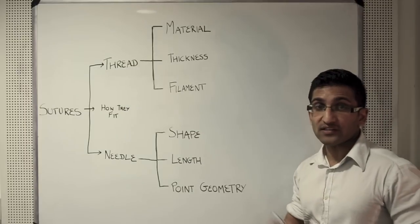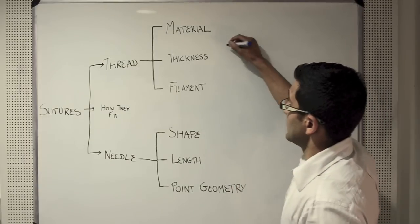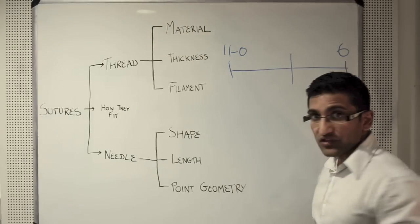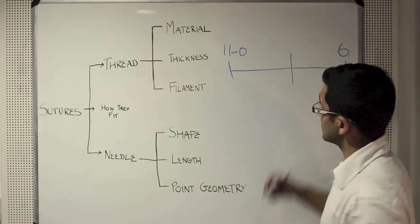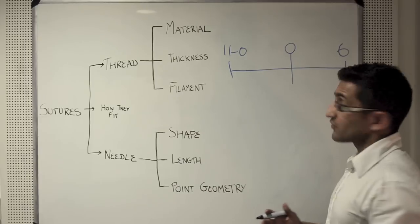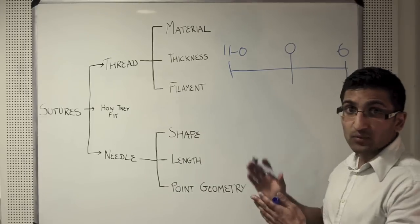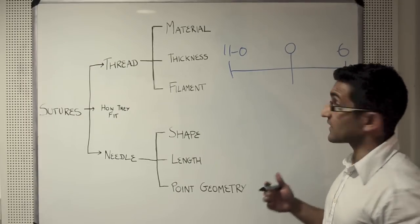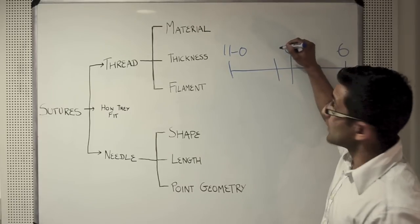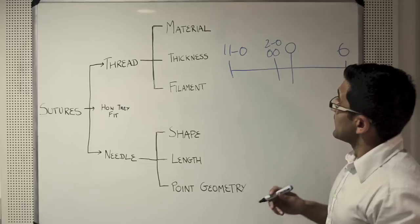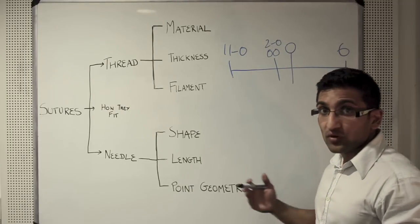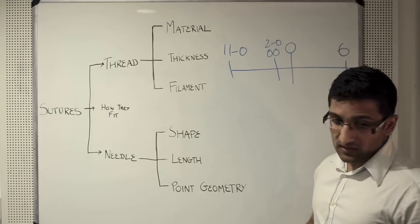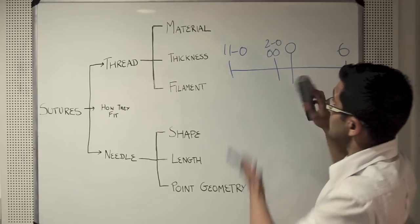Another way to think about suture material is in terms of its thickness or calibre. Sutures range in thickness from 11-0, which is the smallest, all the way to size 6. Initially we were only able to create sutures from size 0 to size 6, with 0 being the smallest. As technology advanced, we were able to create sutures of smaller thickness — smaller than 0 was termed 0-0 or 2-0, and eventually up to 11 zeros, termed 11-0. Hence why 11-0 is smaller than 2-0, and so on.